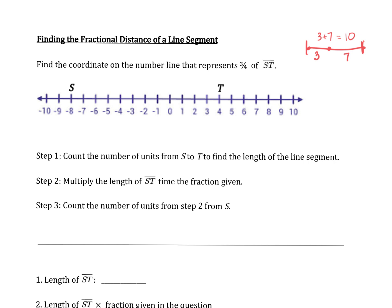This question is asking us to find what point on a number line represents just a portion of the segment ST. A portion can be represented as a fraction, in this case being 3 fourths. So we want to know, in between negative 8 and positive 4, what point represents 3 fourths of that total distance.